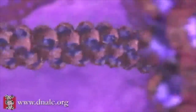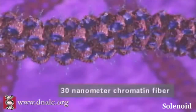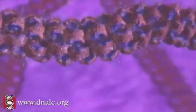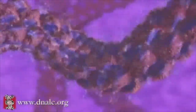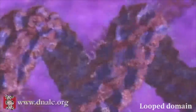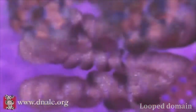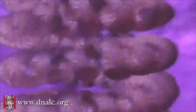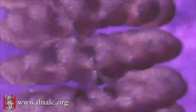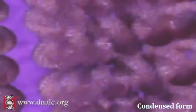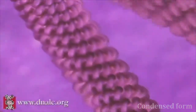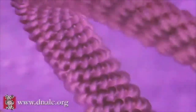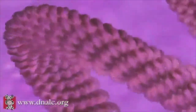This fiber, which at this point is condensed to a thickness of 30 nanometers, is then looped and further packaged using other proteins which are not shown here. This remarkable multiple folding allows six feet of DNA to fit into the nucleus of each cell in our body, an object so small that 10,000 nuclei could fit on the tip of a needle.